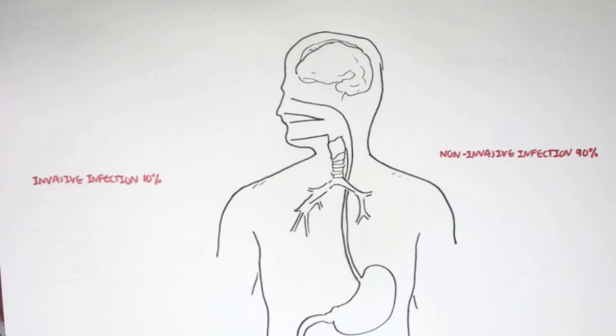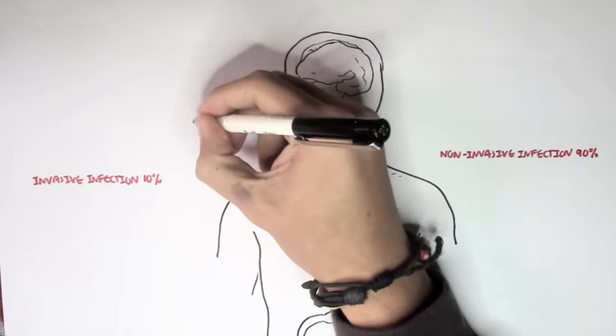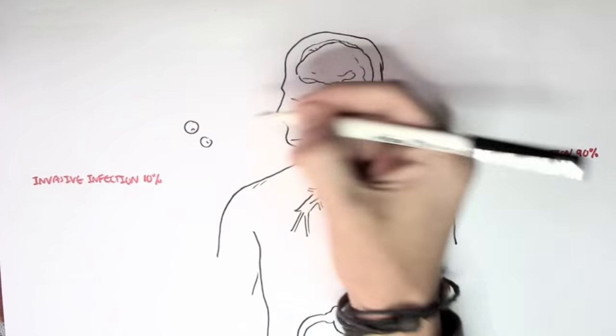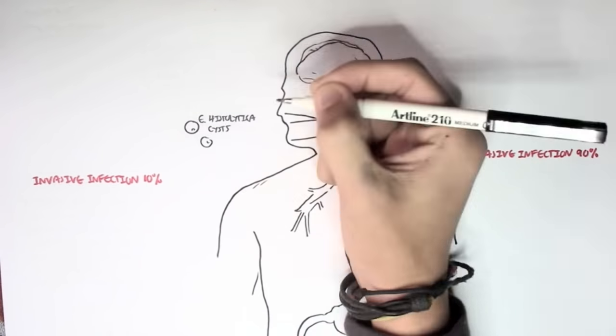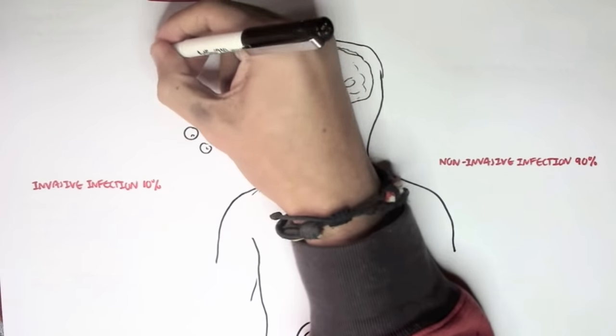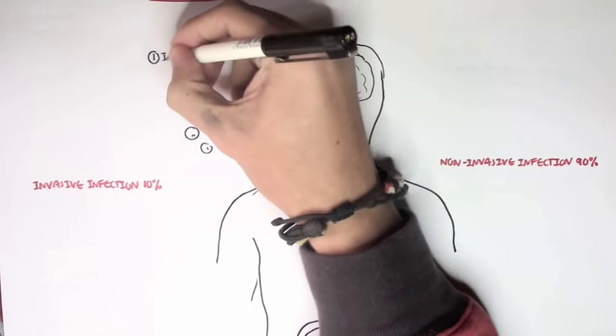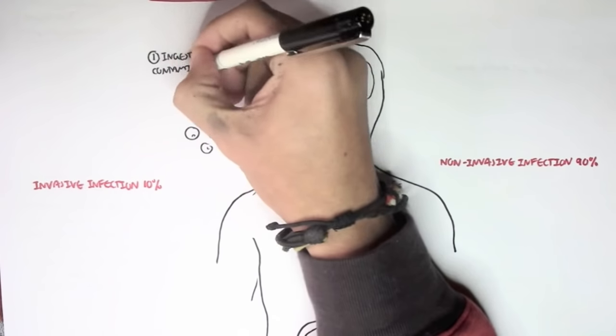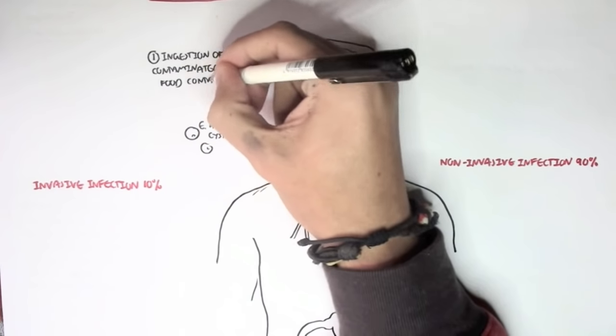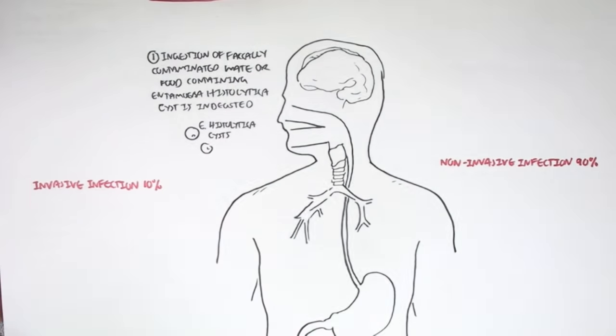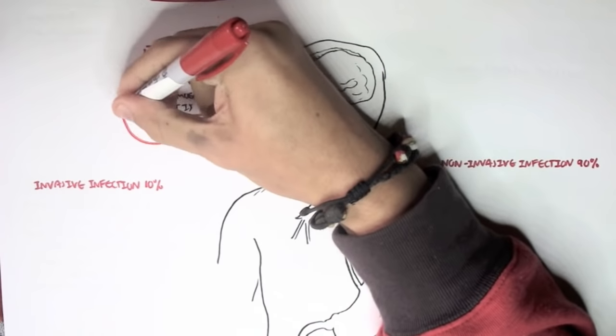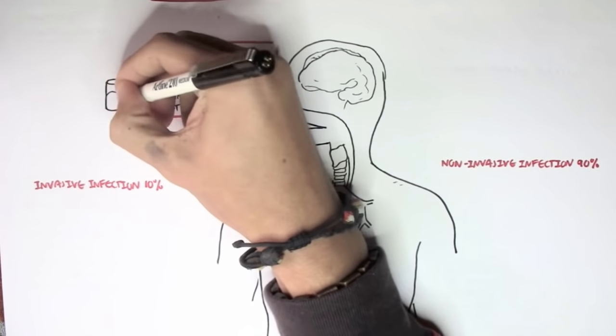We will first follow a non-invasive infection, which occurs in 90% of the cases. Entamoeba histolytica cysts are the infective form of this protozoa. So ingestion of fecally contaminated water or food containing Entamoeba histolytica cysts can be ingested through the mouth. These cysts can come from contaminated food or water, fecally contaminated food or water.